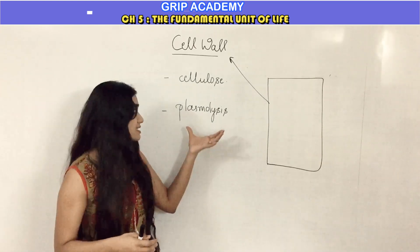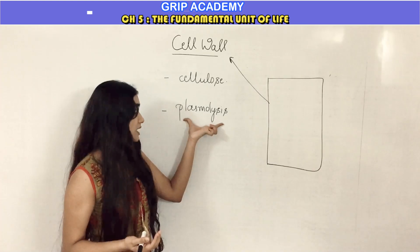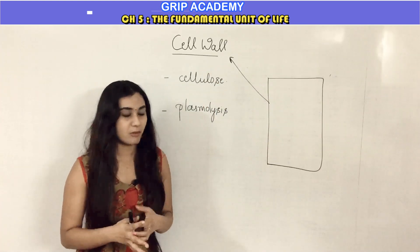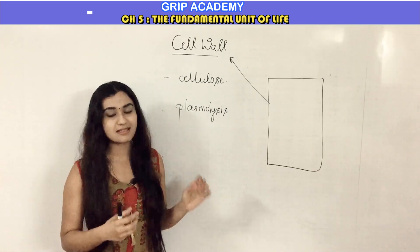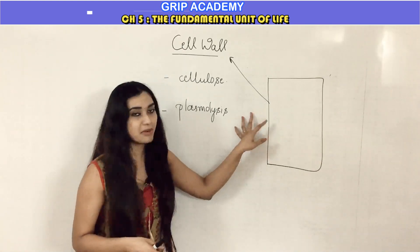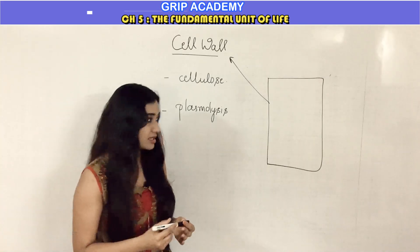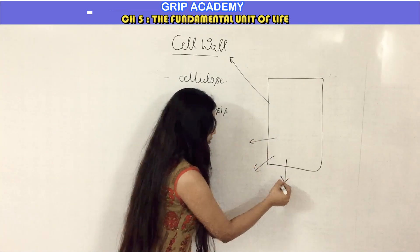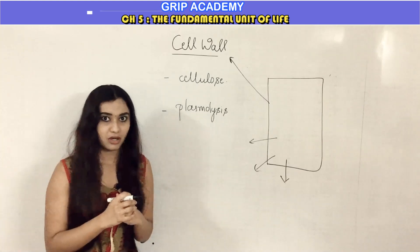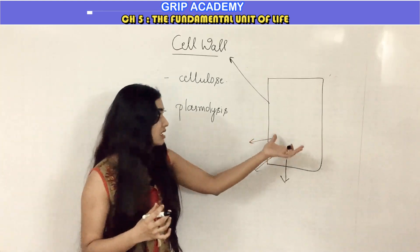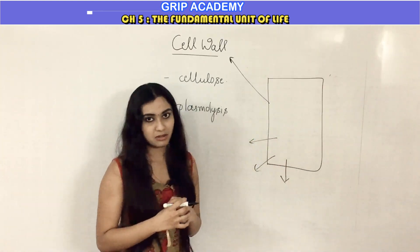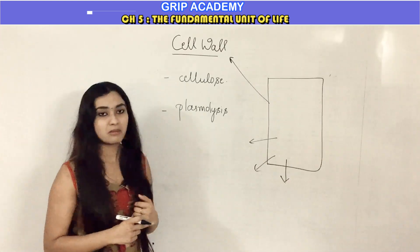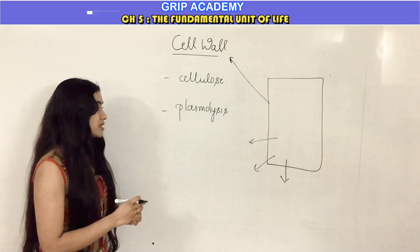There is a phenomenon called plasmolysis with respect to the cell wall. Plasmolysis is a phenomenon in which a living plant cell loses its water because of exosmosis through the cell wall, and the contents of the cell get shrunken. This condition is called plasmolysis.